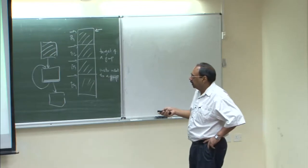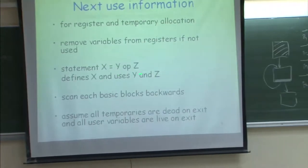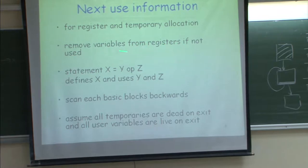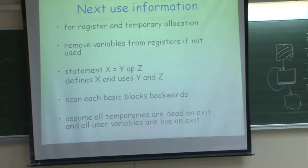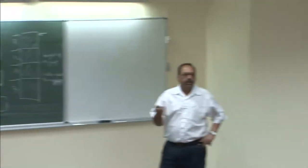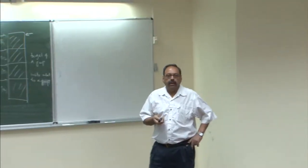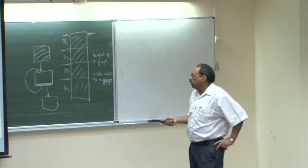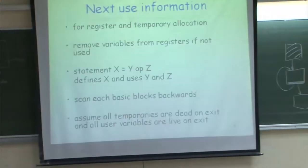For the statement 'x := y op z', x is being defined and y, z are being used. We scan each basic block backwards — the reason is that we want to find future uses of variables. We assume all temporaries are dead on exit from the basic block. Register allocation and optimization are done only within the basic block: when entering a basic block, no variables are in registers; when exiting, no variables are in registers.